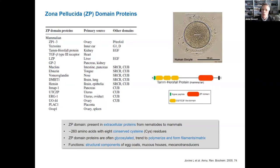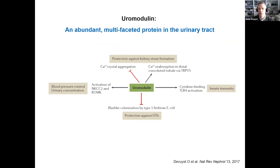Uromodulin is a member of the ZP domain family — the most famous being zona pellucida proteins that protect oocytes. It is conceptually interesting that the kidney produces an extracellular matrix protein abundantly in the urine, and that these proteins usually have a protective role and tend to form macromolecular complexes and filaments. Uromodulin knockout mice allowed us to better understand its role in regulating salt transport, immunity, and protecting against kidney stones and urinary tract infections.